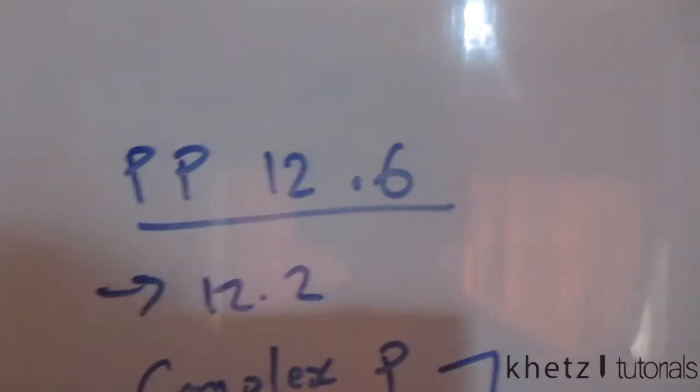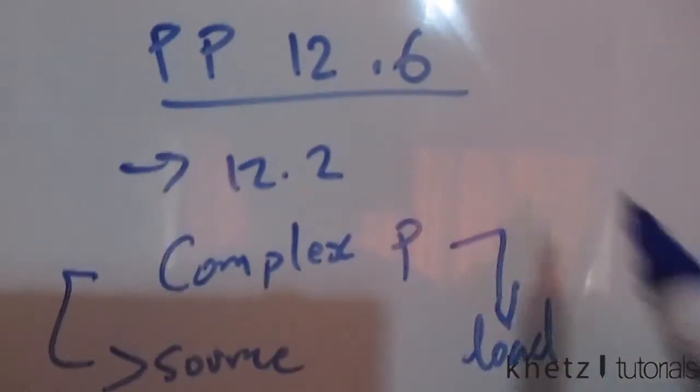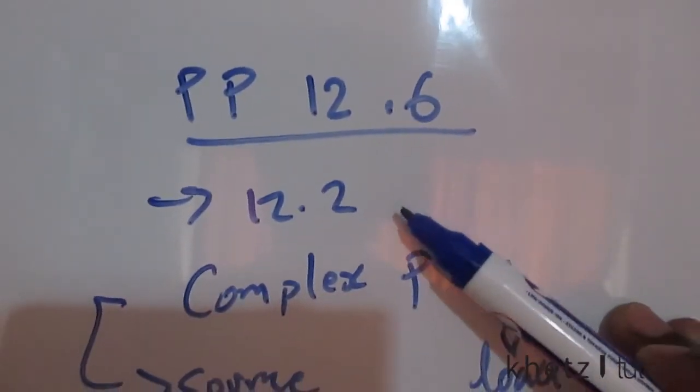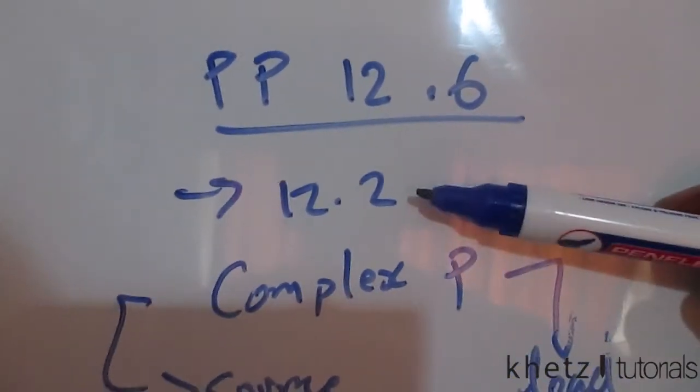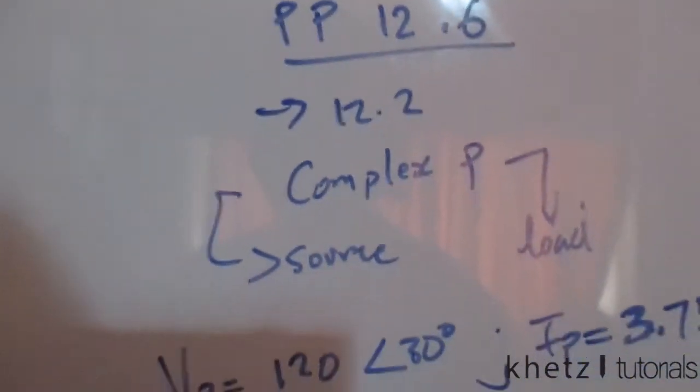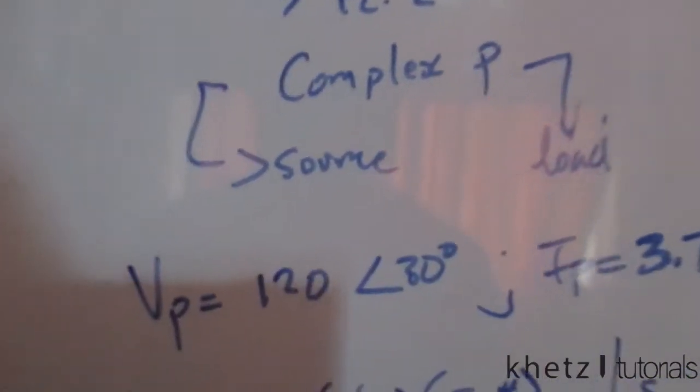Welcome to GATS Tutorials. In this video I'll be doing practice problem 12.6. We are asked to refer back to 12.2, I'll leave the link to that in the description. From the problem stated in 12.2, we are asked to find the complex power at the load and at the source.